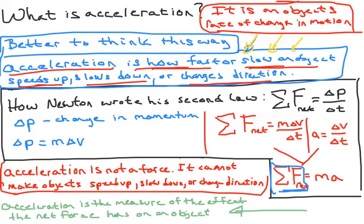When we apply a net force using this equation, the mass is the object and the acceleration is the rate of change of motion. When you multiply the rate of change in motion times the mass, you get a number equal to the net force. But acceleration and mass are not forces.